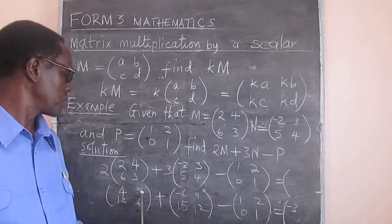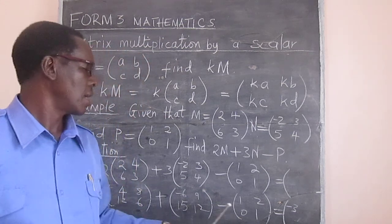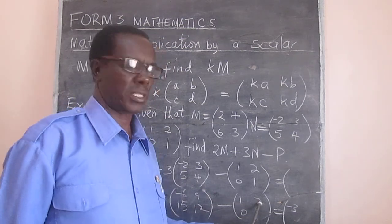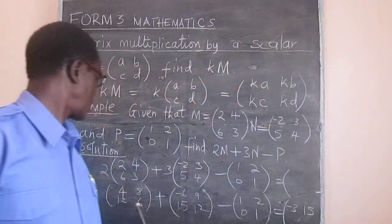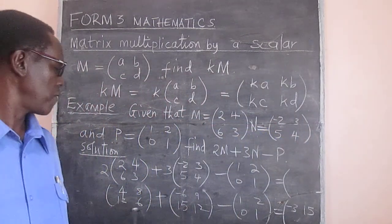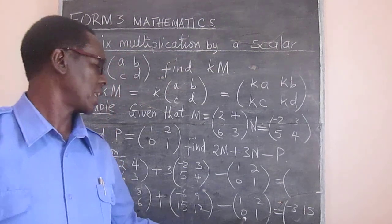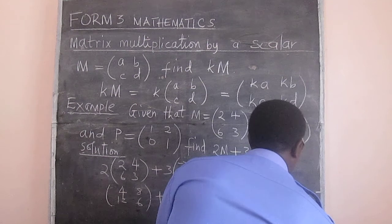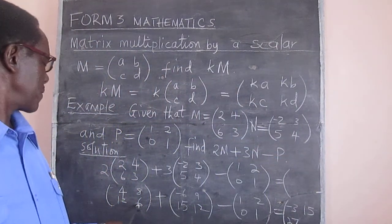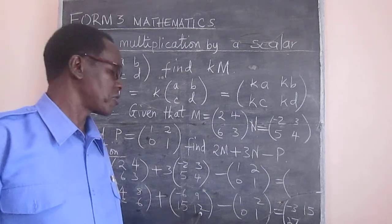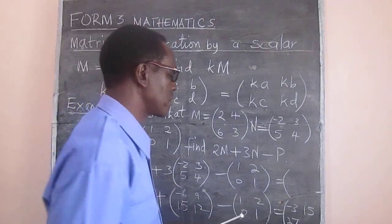Continuing: 12 plus 15 is 27, minus 0 remains 27. And finally, 6 plus 12 is 18, minus 1 gives 17.